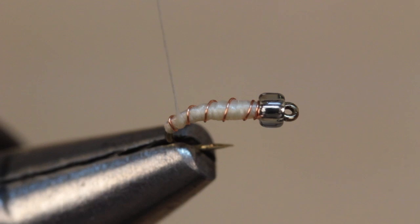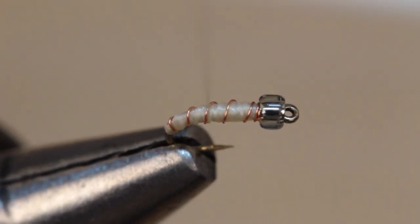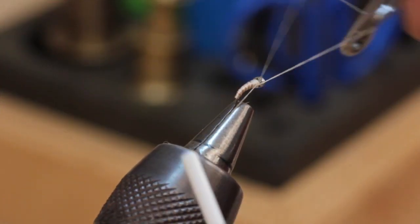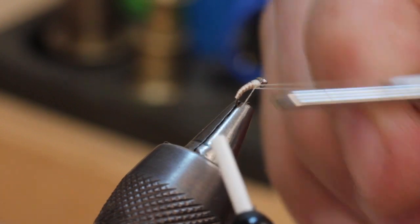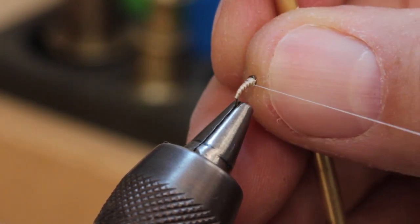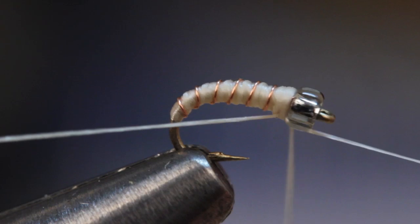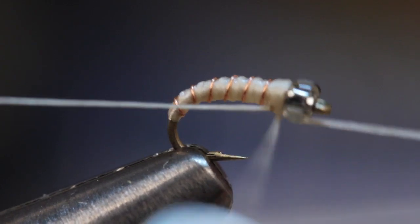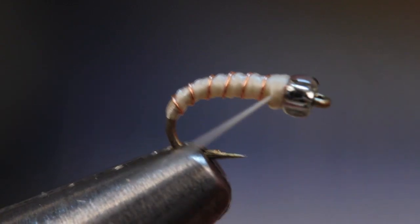Pick up your bobbin and take wraps up the hook shank between the wire wraps and then cover and secure the wire behind the bead. Do one 4 or 5 turn whip finish to secure your thread and then do another to build up the thorax a bit. You can then snip or cut your tying thread free.